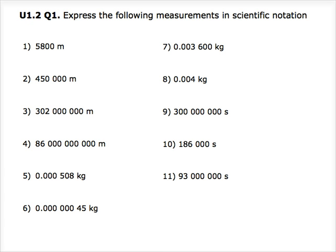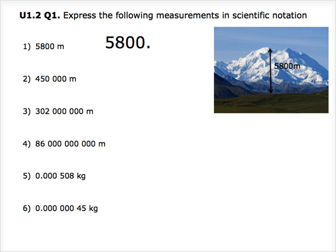We have 11 values to convert, but let's take a look at the first six. Question 1: 5800 meters. We have to move the decimal point three places to the left in order to form a coefficient that is between 1 and 10. So we will have 5.8 times 10 to the power of 3. The value of 3 is derived from the number of times the decimal point moves.